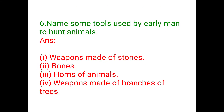Sixth question: name some tools used by early man to hunt animals. Answer. Weapons made of stones, bones, horns of animals, and weapons made of branches of trees.